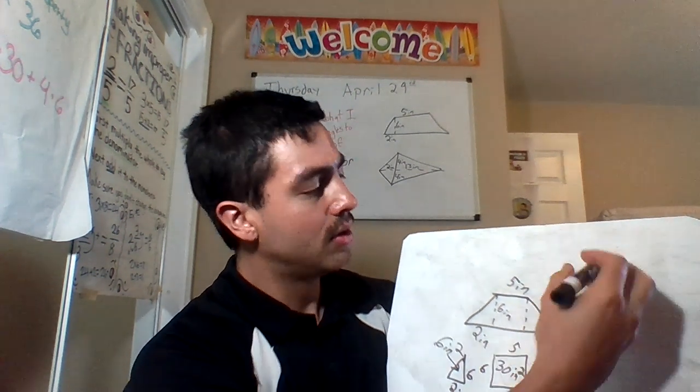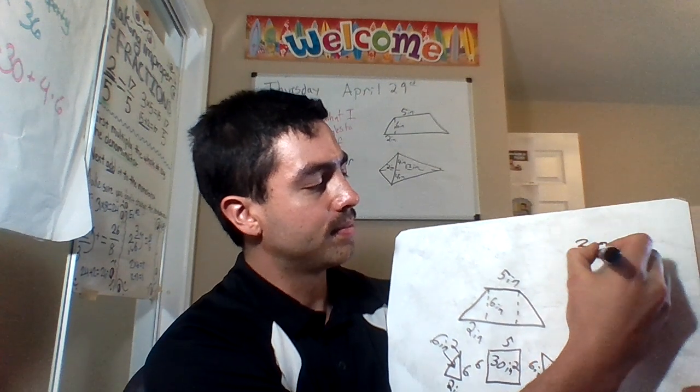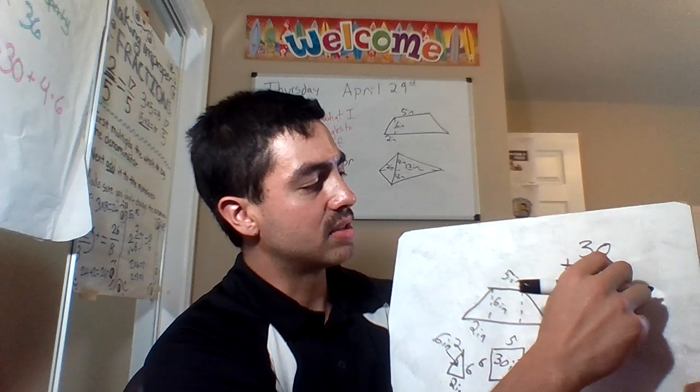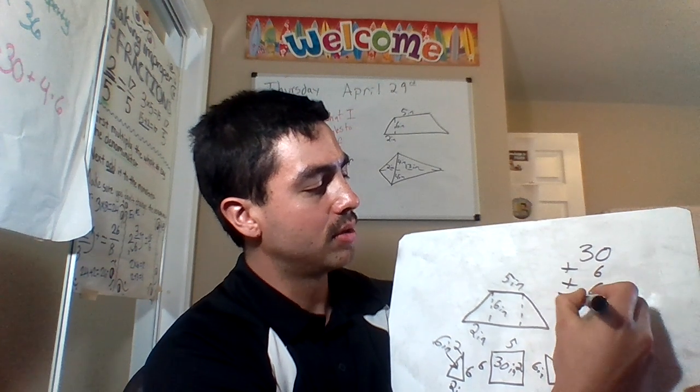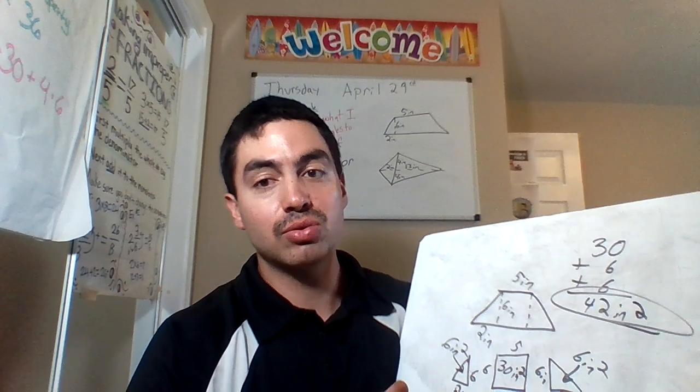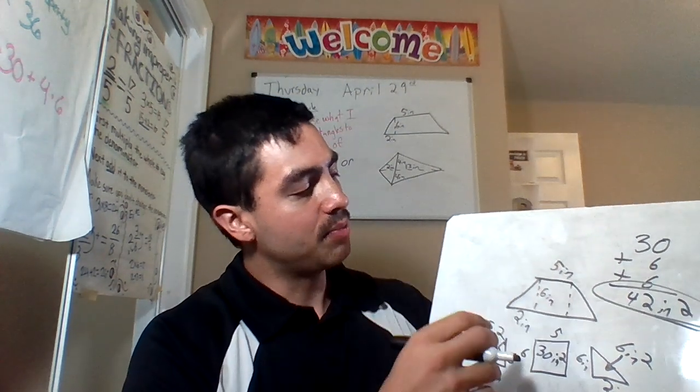Now, how do we get the total area? We add it. Six plus six is 12 plus 30 is 42 inches squared. So whenever you have a trapezoid, split it up. Split it up into shapes that you know of.